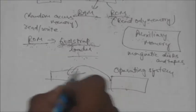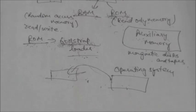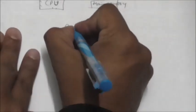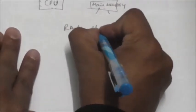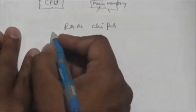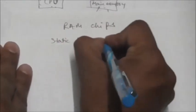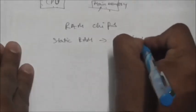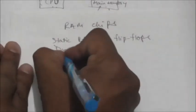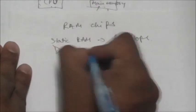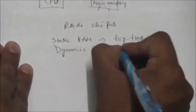Integrated circuit RAM chips are available in two possible operating modes: static and dynamic. Static RAM consists of flip-flops and dynamic RAM consists of capacitors.